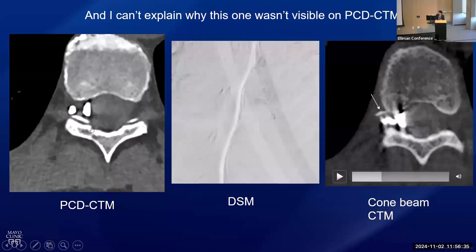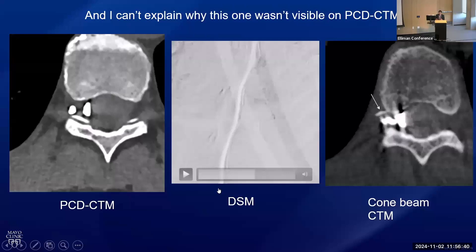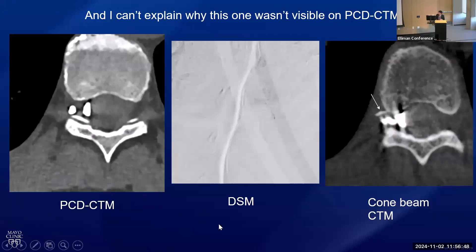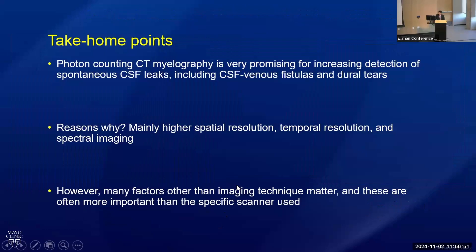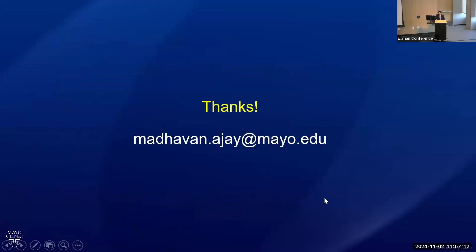At the end of the day, we have to do everything we can to optimize our imaging techniques while recognizing there are some factors we don't understand, and we have to continue to research and pursue more knowledge about what will increase our odds of finding these fistulas. To conclude, photon counting CT is extremely promising. The main reasons it's helpful are higher spatial resolution, better temporal resolution, and spectral imaging qualities that make contrast brighter. But we should keep in mind there are other things we have to continue to study, and that will continue to maximize the yield of these tests. Thanks so much for your attention.